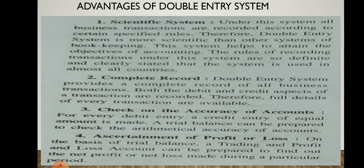First is scientific system. Under this system, all business transactions are recorded according to certain specified rules. Therefore, the double entry system is more scientific than other systems of bookkeeping. This system helps to attain the objective of accounting. The rules of recording transactions under this system are so defined and clearly stated that the system is used in almost all companies. When we record any business transaction, we should follow some specified rules.